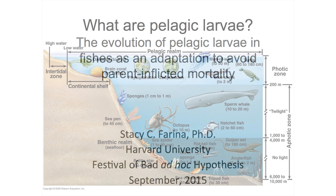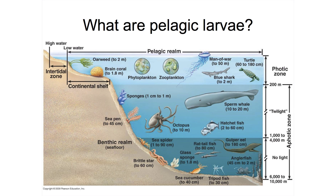So what does that mean? What are pelagic larvae? When fishes reproduce, they release a bunch of eggs out into the open ocean. The eggs hatch up in this pelagic realm at the surface, and the larvae develop in that open ocean hundreds of miles away from their parents.